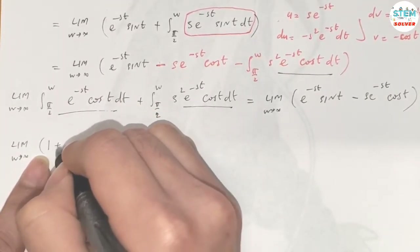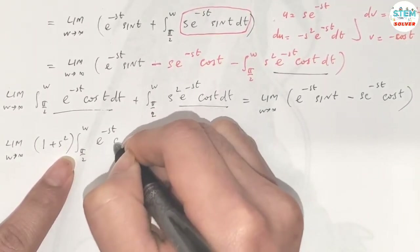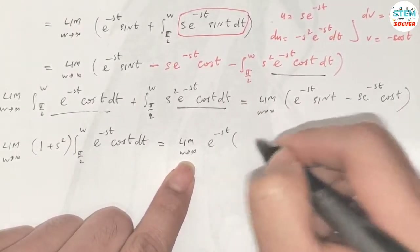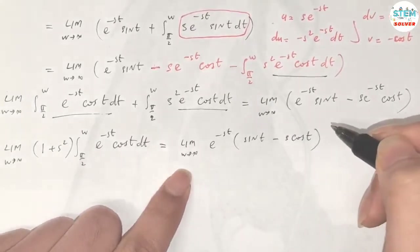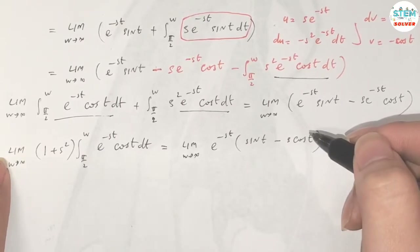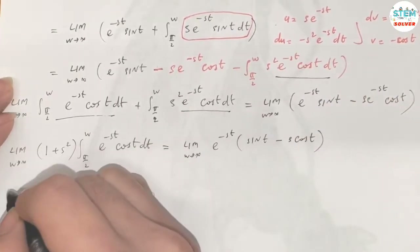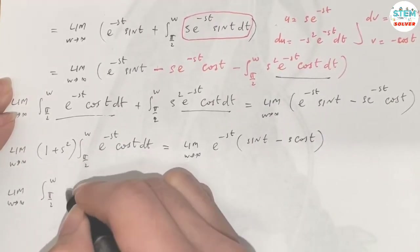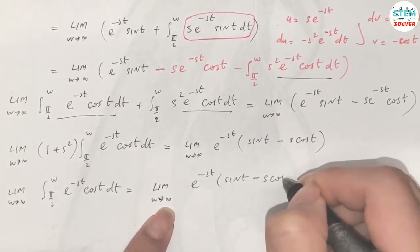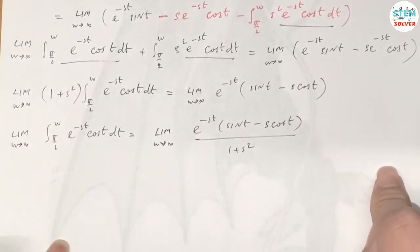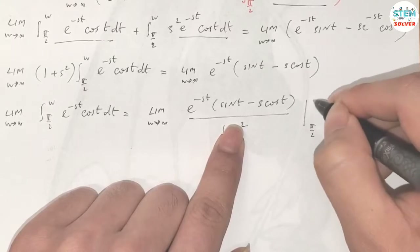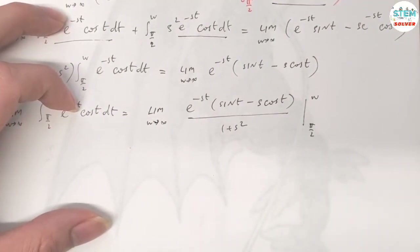Factoring the left side, we get (1 + s²) times the integral from π/2 to w of e^(-st) cos(t) dt, which equals e^(-st) times [sin(t) minus s cos(t)]. Dividing both sides by (1 + s²), we obtain the integral equals the limit as w goes to infinity of e^(-st) [sin(t) minus s cos(t)] over (1 + s²), evaluated from π/2 to w.